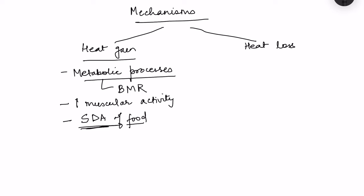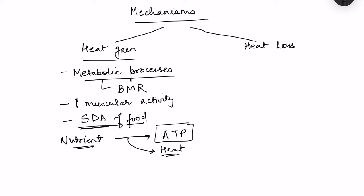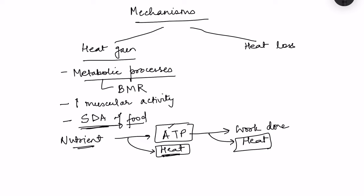When any nutrient is metabolized for ATP production, it is not that the whole energy of the nutrient is converted into energy — most of it is lost as heat. Heat is produced both when ATP is being generated and when ATP is utilized, because most of the energy in ATP is also lost as heat rather than being used for work. So heat is gained during the production of ATP as well as in the utilization of ATP.